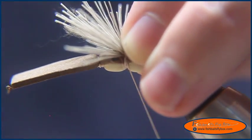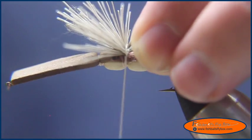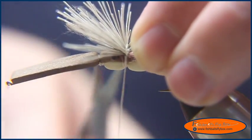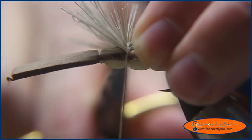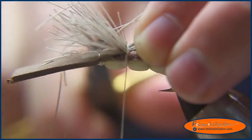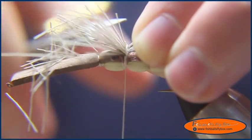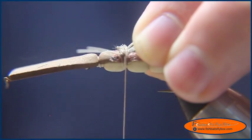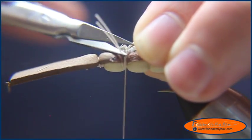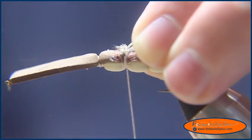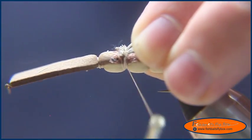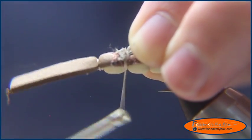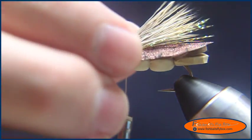And at this point, while my fingers are still down on the fly, I'm going to grab my snips, and snip the butt ends of that off, being careful not to cut the thread. And once we've gotten to that point, put another wrap of thread on that just for good measure.